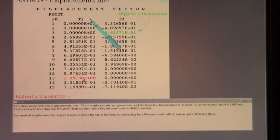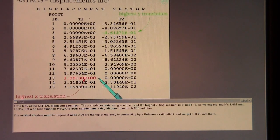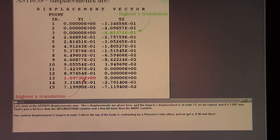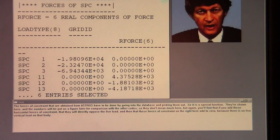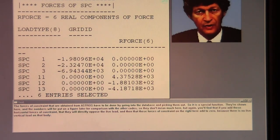Let's look at the Astros displacements now. The X displacements are given here, and the largest X displacement is at node 13, as we expect. And it's 1.097 millimeters. That's just a bit less than the Nastran solution, and a tiny bit more than the MARC solution. The vertical displacement is the largest at node 3, where the top of the body is contracting by Poisson's ratio effect, and we get a minus .46 millimeters there.